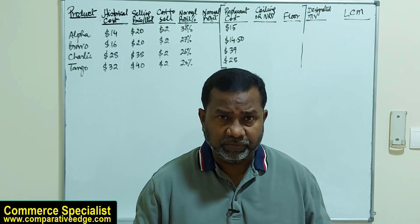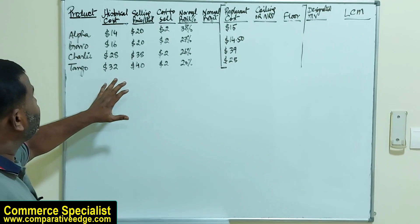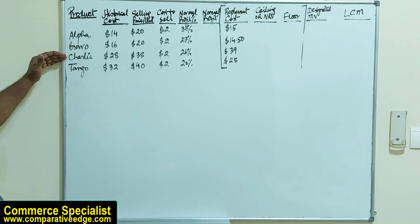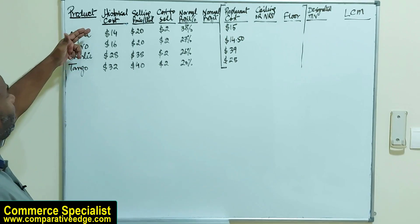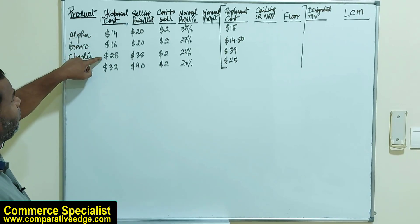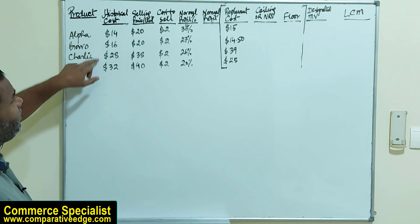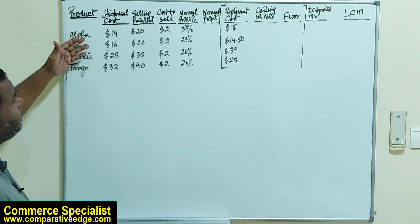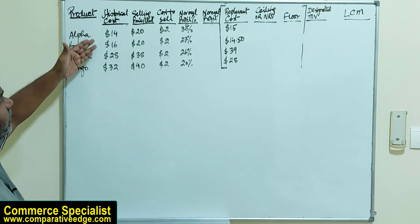I have designed a question. There are four products: Alpha, Bravo, Charlie, and Tango. Historical cost is given: $14, $16, $28, and $32. These are per unit historical costs, meaning the cost at which you purchase these units.